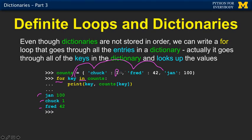Now, if I actually want to get these values, then I just say count sub key. And so key is whatever, Jan, Chuck, and Fred. And so this is count sub Jan, count sub Chuck, and count sub Fred. And so that's how we go through the key value pairs in a very simple for loop. Just remember, if you just put the name of a dictionary here, the loop is going to go through the keys in the dictionary, not the values in the dictionary.